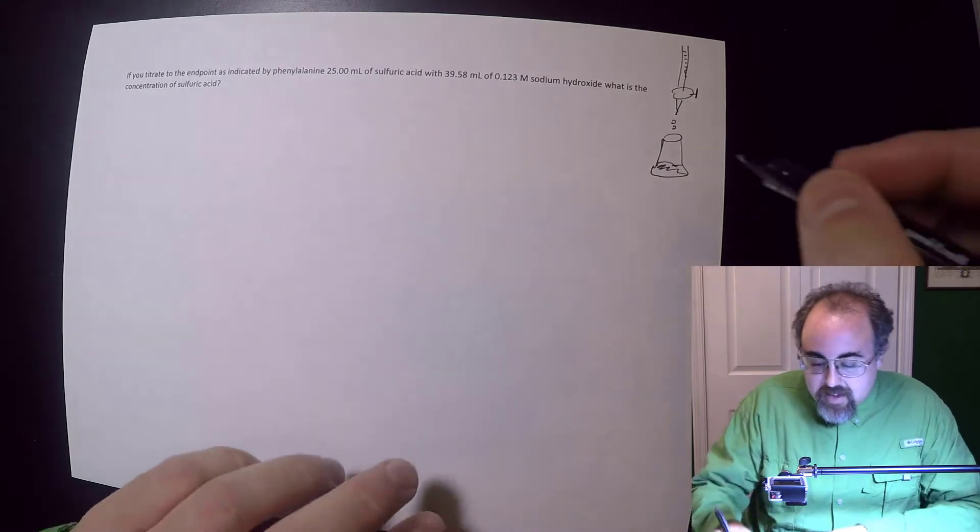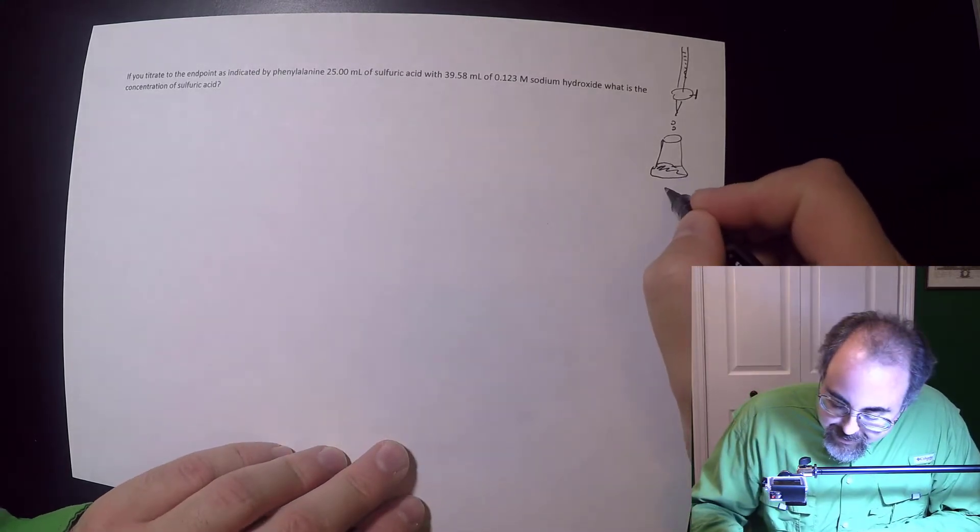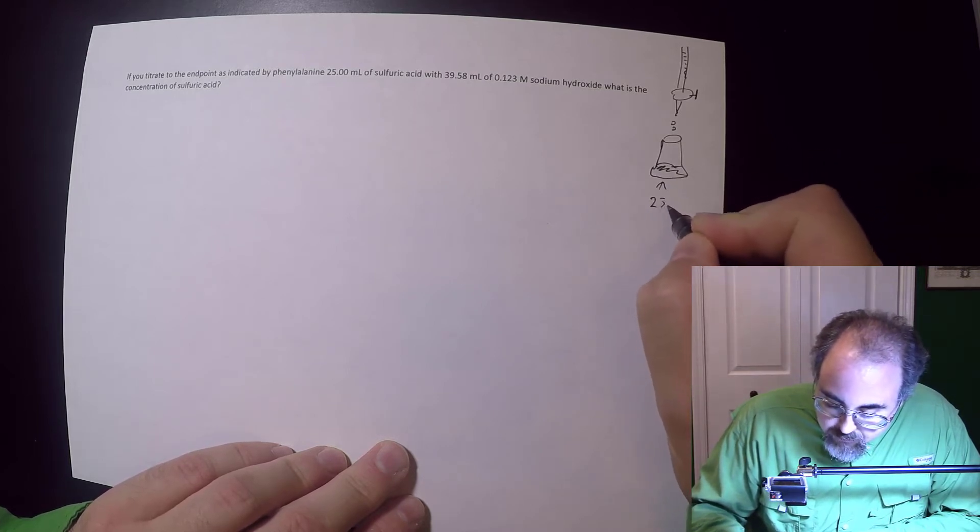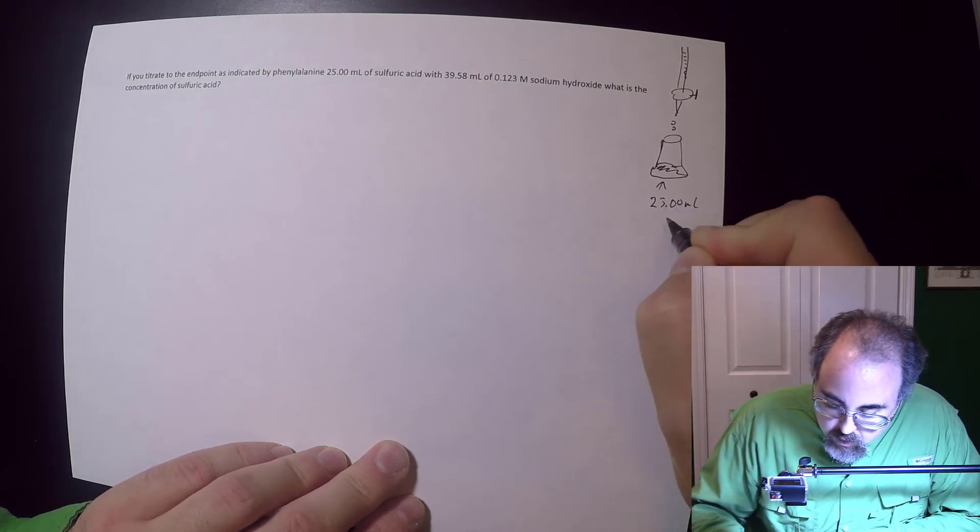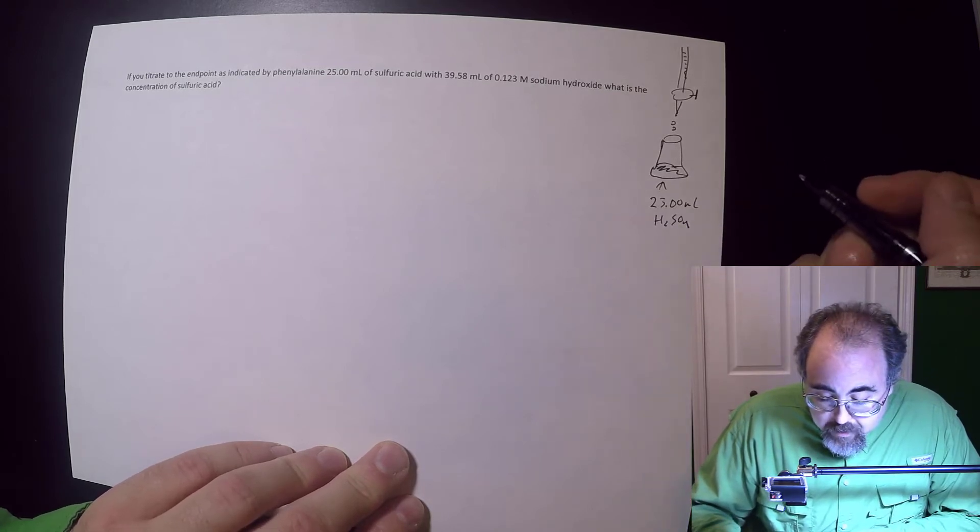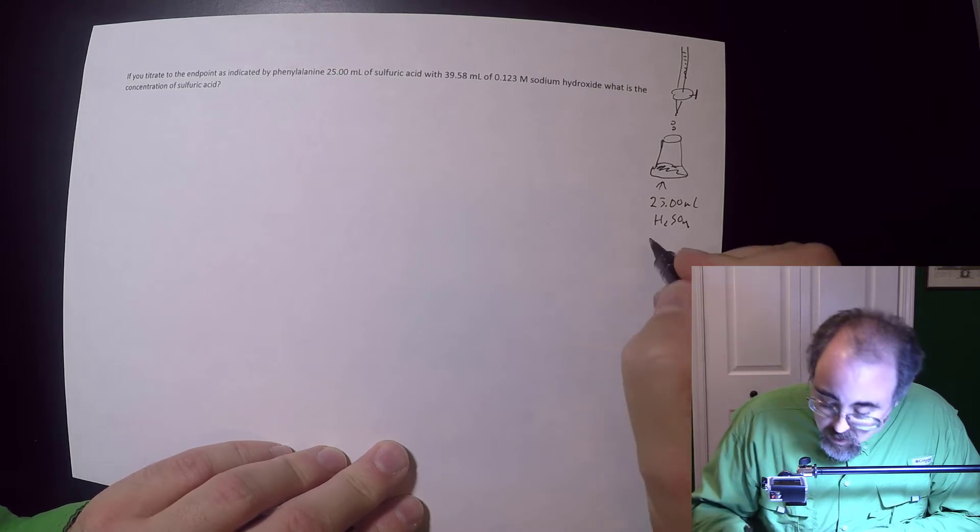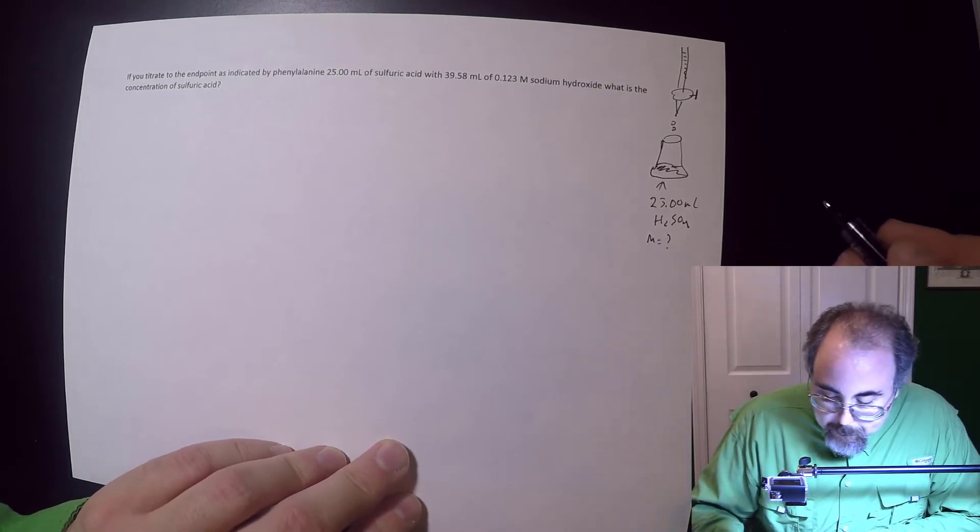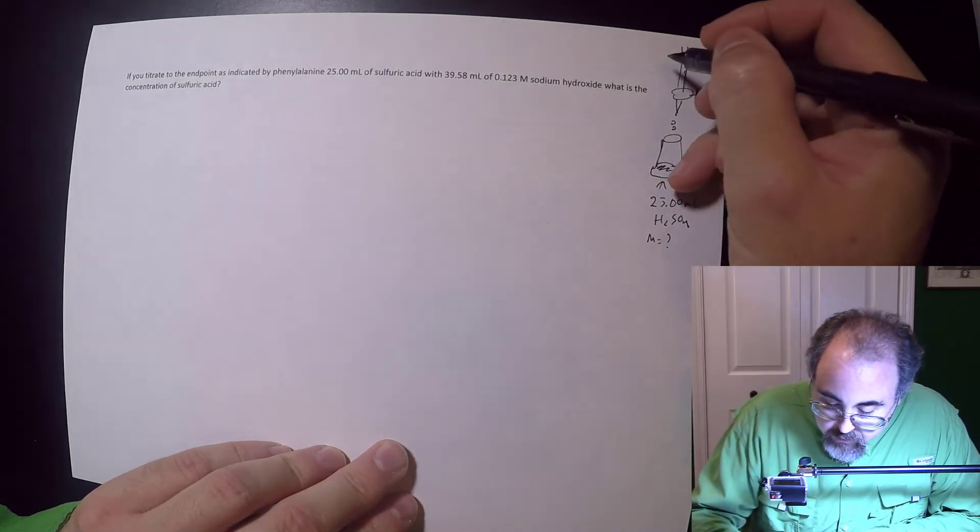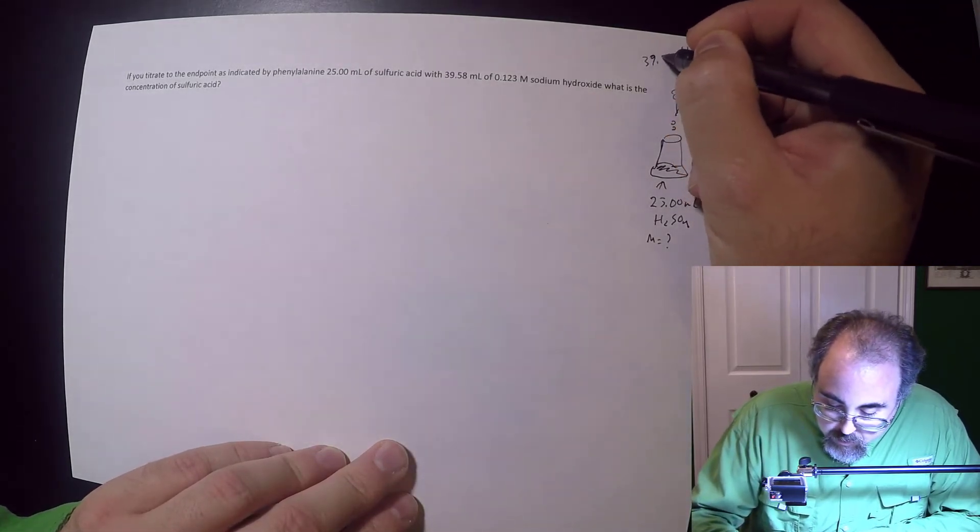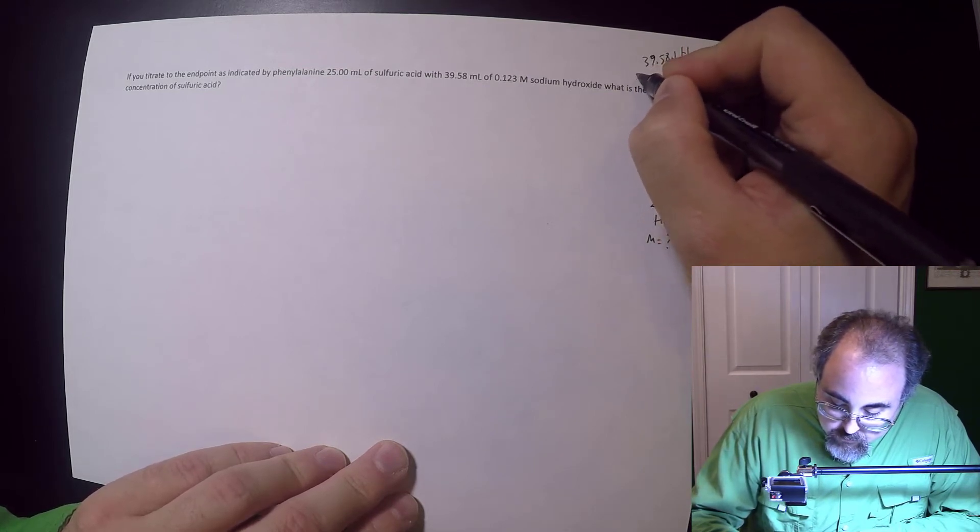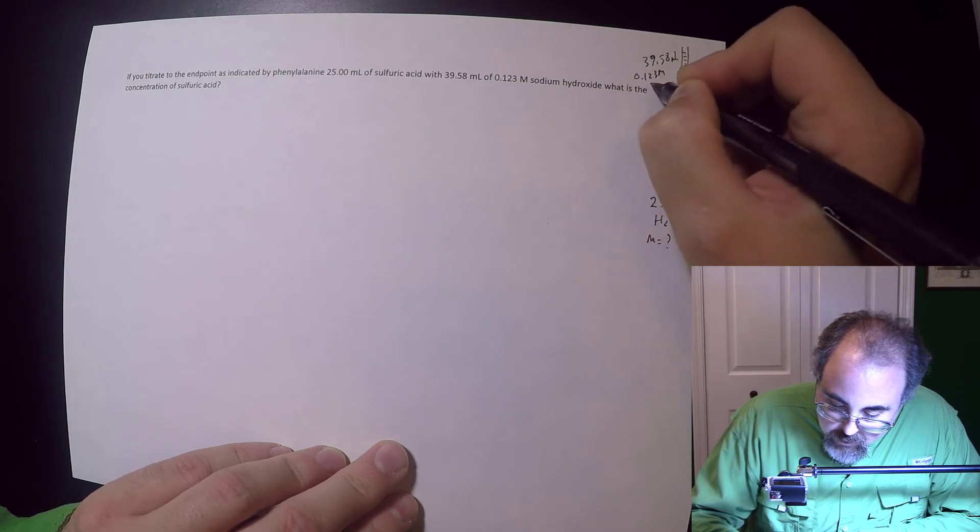In this case, typically you put the acid in the flask. It's easier to see the phenolphthalein if you do that. So we have 25.00 milliliters sulfuric acid, which is H2SO4. It doesn't say concentration, so odds are that's what we want to find out.